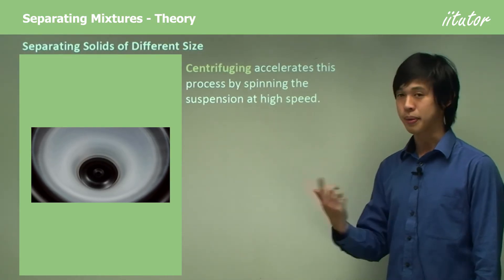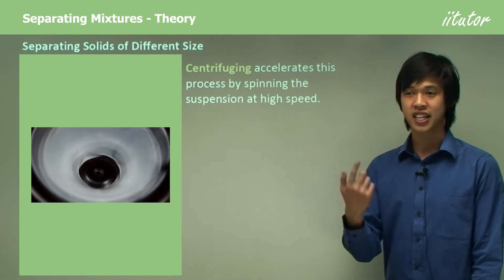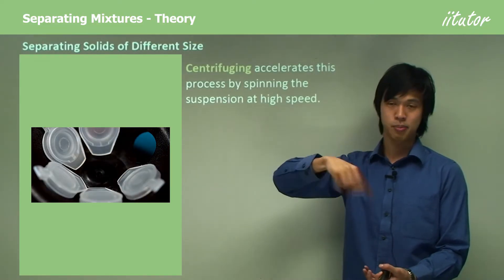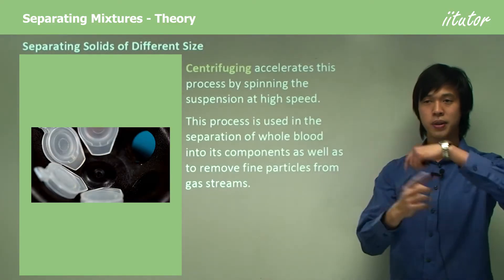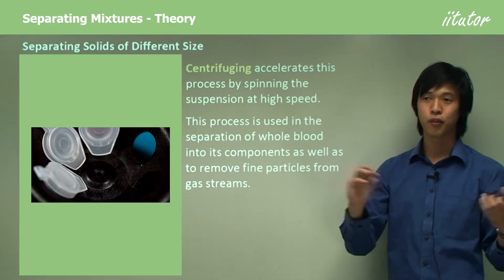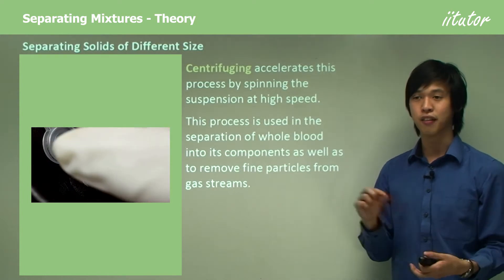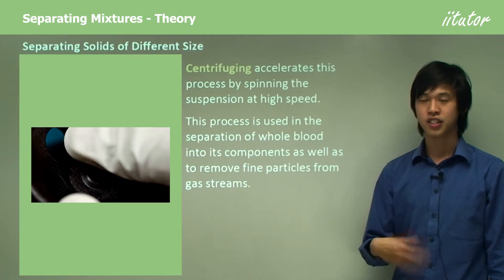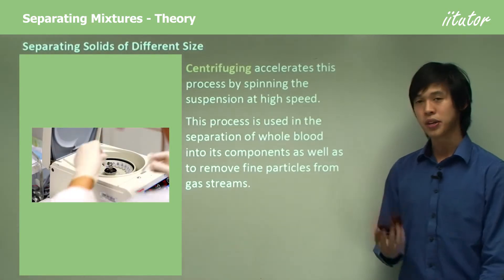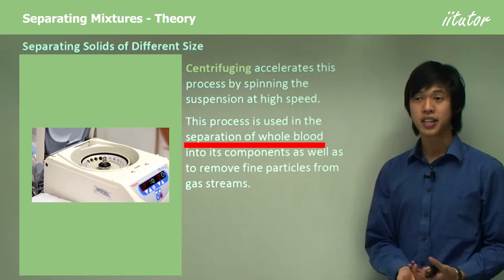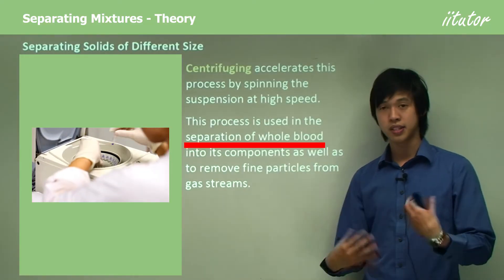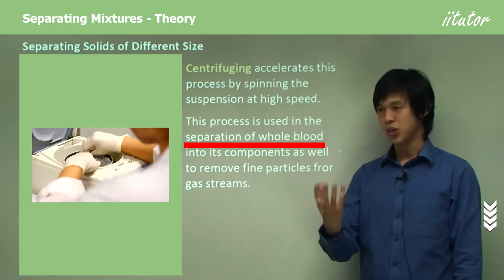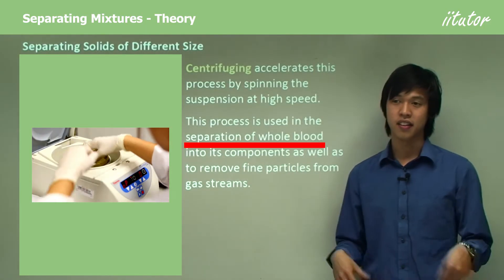Centrifuging spins the suspension — the liquid — at very high speed. When you spin it, it imparts a force on each of the particles. Because some are more dense, they fall to the end of the tube faster than the less dense particles. So centrifuging is used to separate solids in a suspension. We use it in the separation of blood — when you donate blood, they can separate it into blood cells, different proteins and things, so each part can be used instead of having to use whole blood.